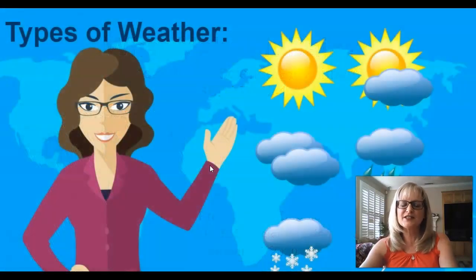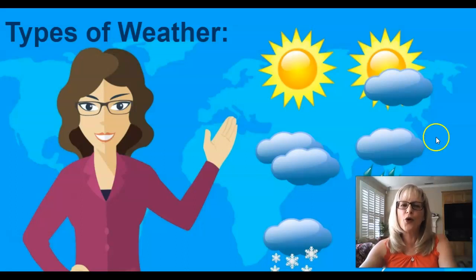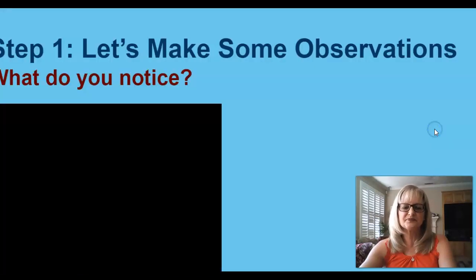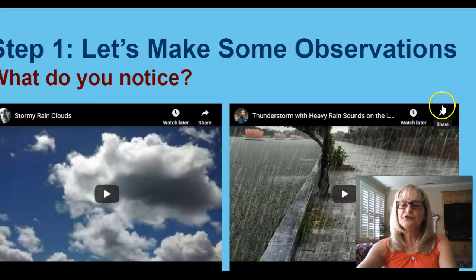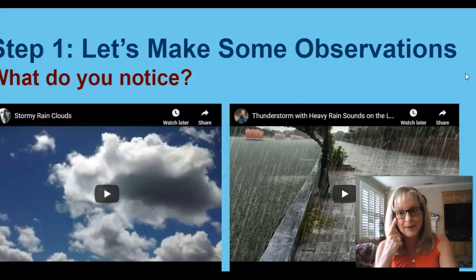There are many different types of weather. Today, we are going to focus on rainy weather. We will be scientists and follow the scientific method to learn more about rain. The first step in the scientific method is to make an observation. Let's look at these two videos and make some observations. While you are watching, I want you to observe what you see happening and what you hear.